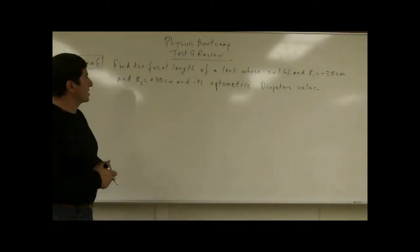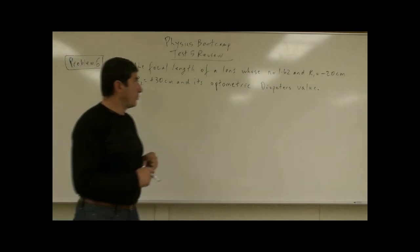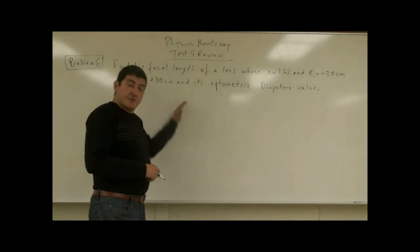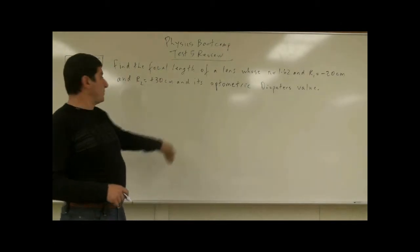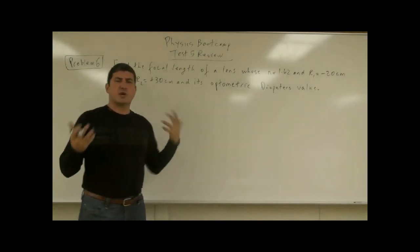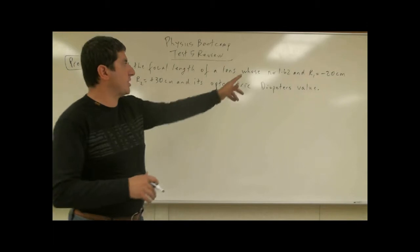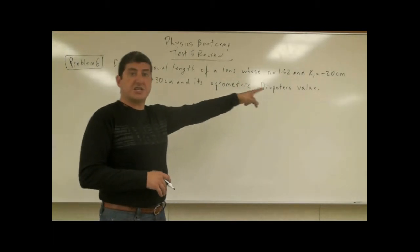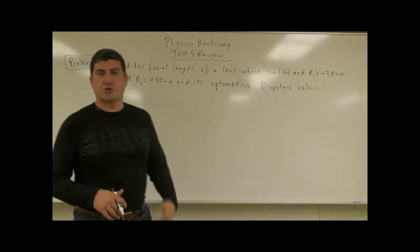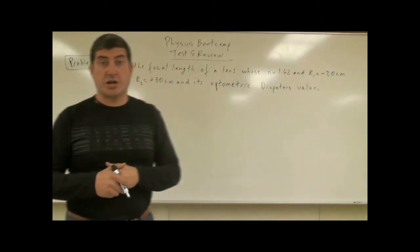Problem 6 says: find the focal length of a lens whose index of refraction is 1.62, whose radius of curvature on the front side is negative 20 centimeters and on the back side is positive 30 centimeters. We want to draw the lens from just the description of its radii of curvature, calculate its focal length, and then convert that to diopters.